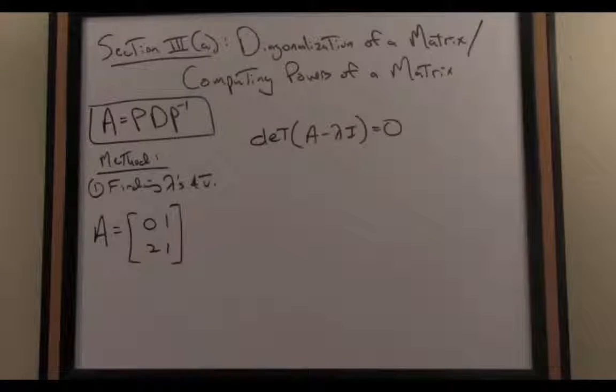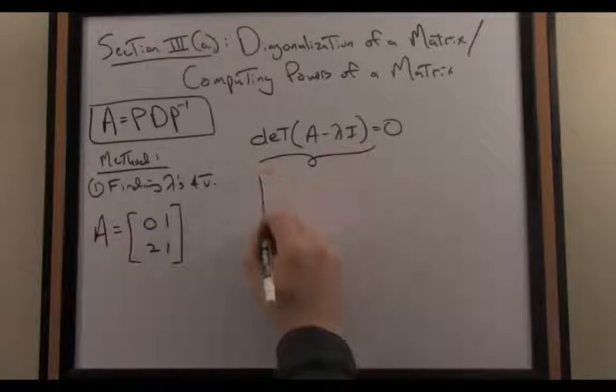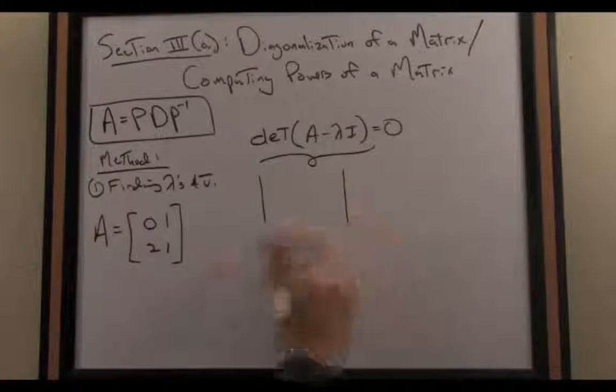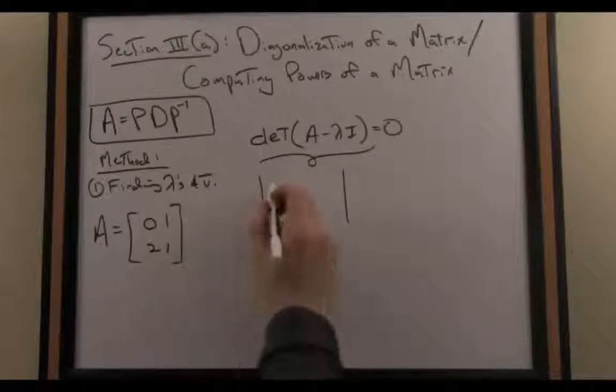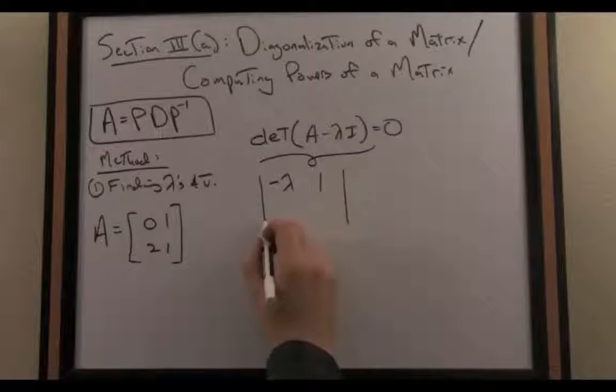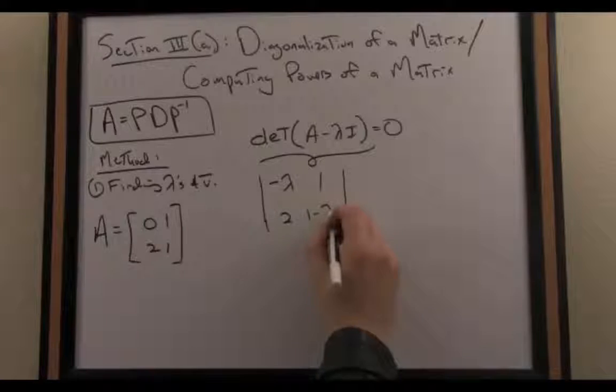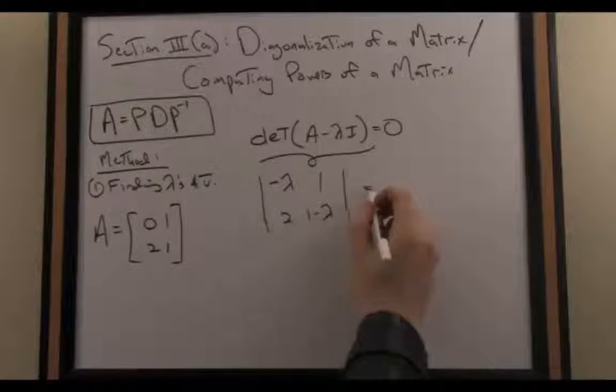We begin by finding the eigenvalues and then the associated eigenvectors. We begin by solving the characteristic equation associated with that matrix, namely det(A - λI) = 0. What we get on the left hand side is called the characteristic polynomial. Let's do this together. We have the determinant of the 2 by 2 matrix A, where I essentially subtract lambda from the main diagonal. That leaves me with -λ, 1, 2, 1-λ.